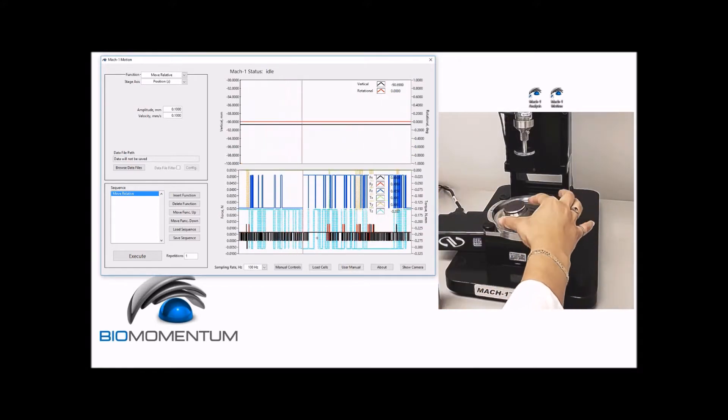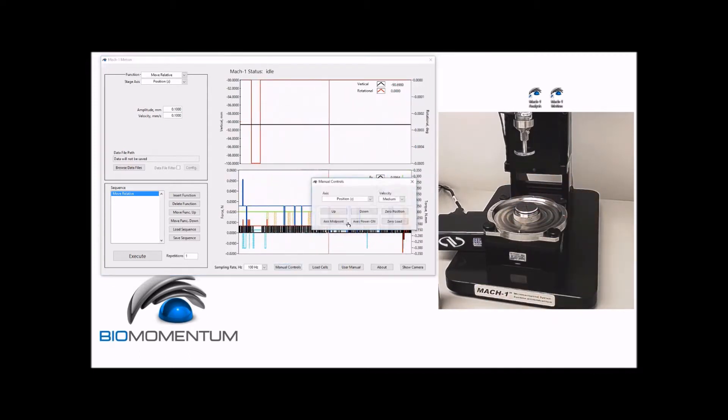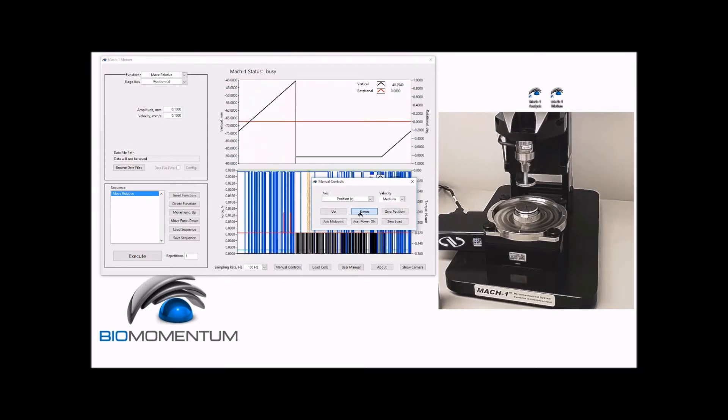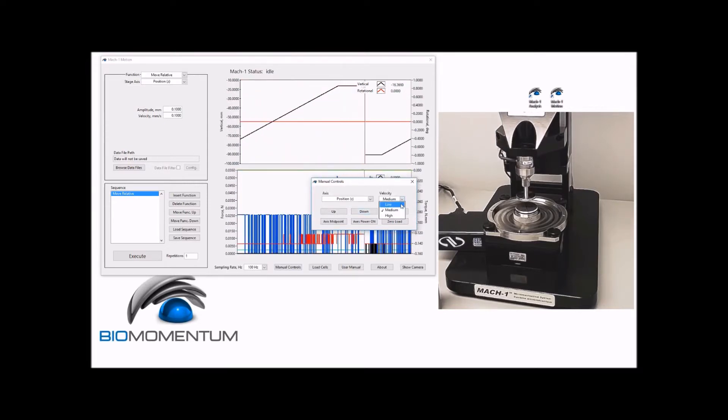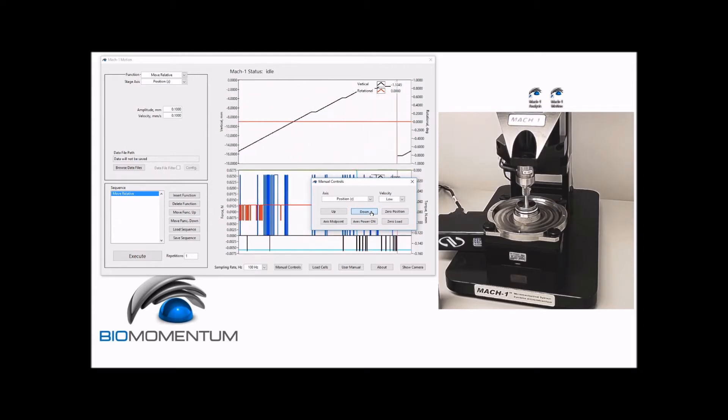Screw the sample holder onto the testing chamber. Using manual controls, lower the stage at medium speed to approximately 20 mm above the sample holder and lower the stage at low speed to approximately 2 mm above the sample holder.